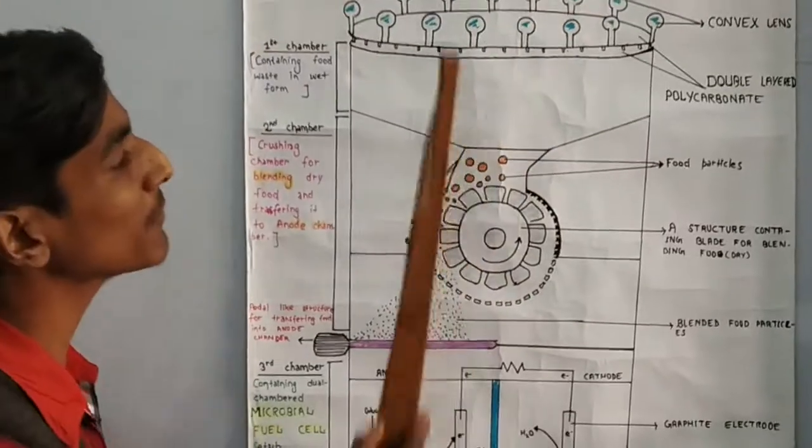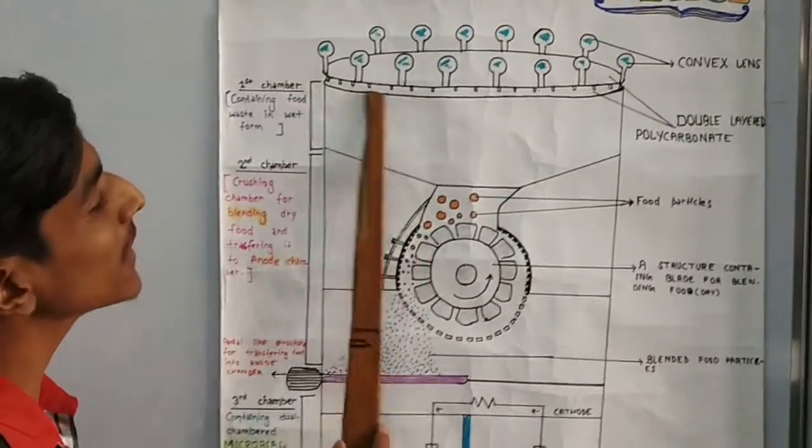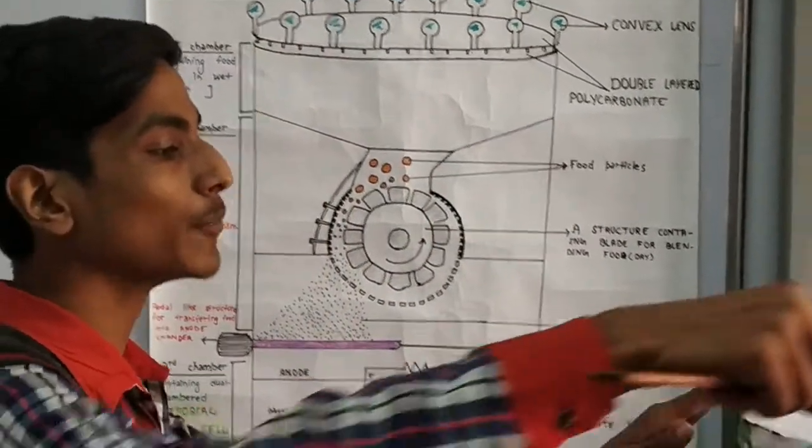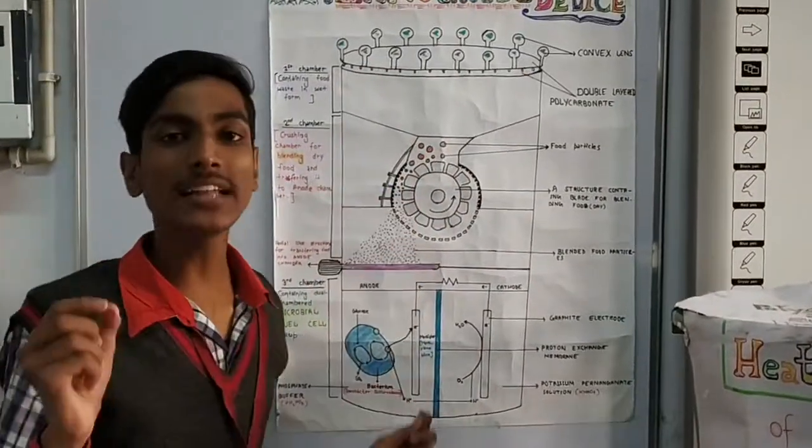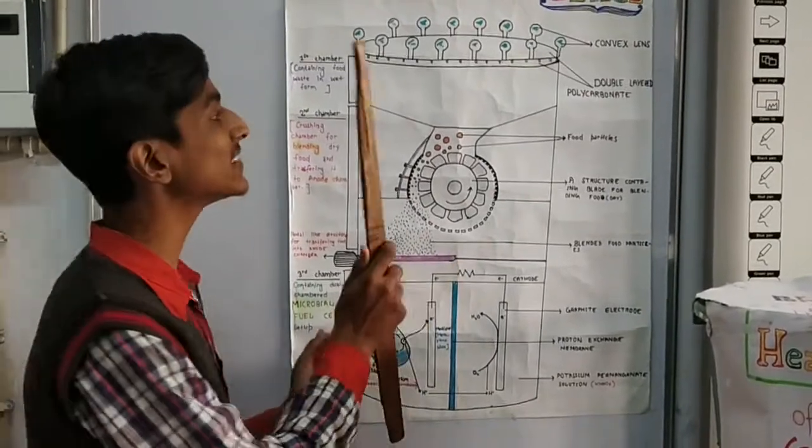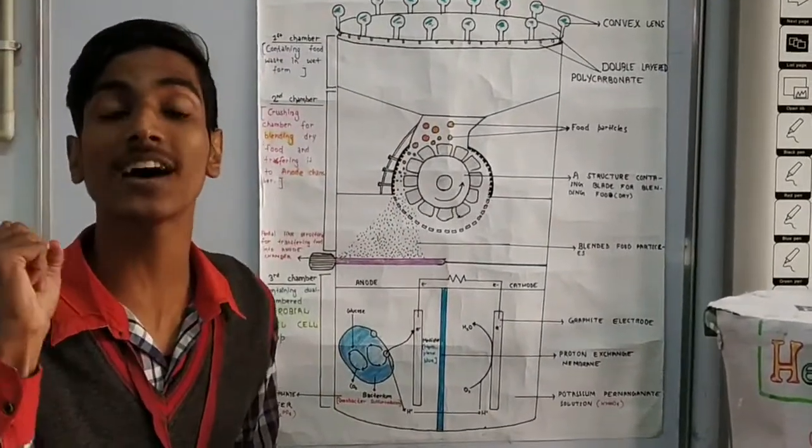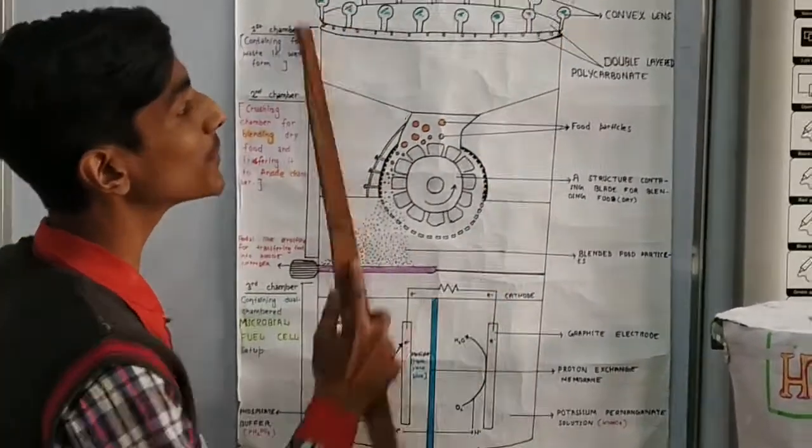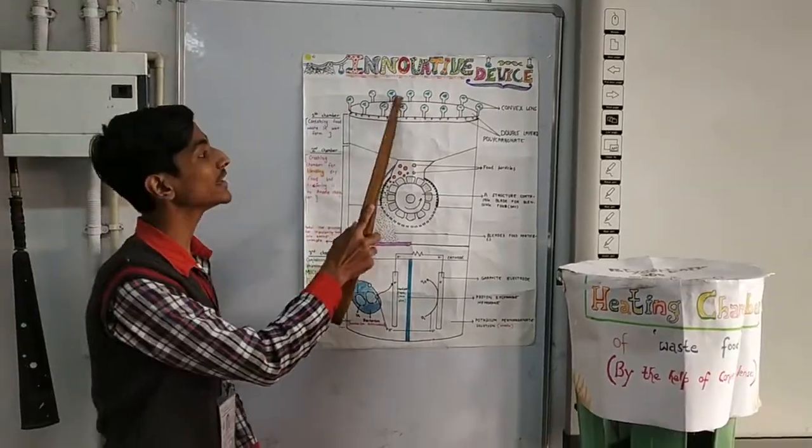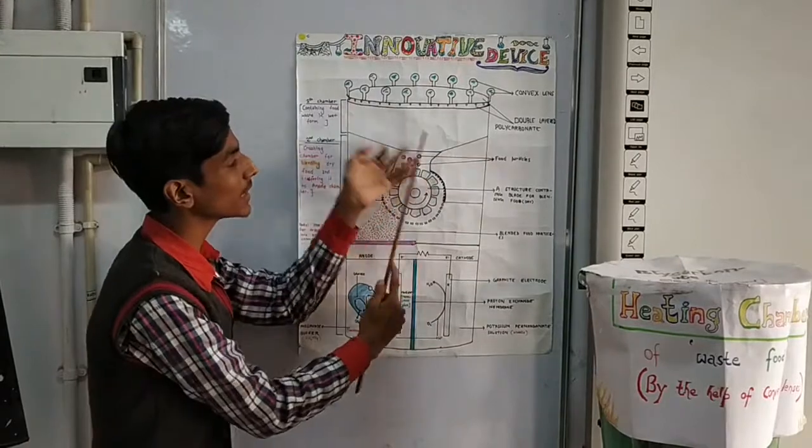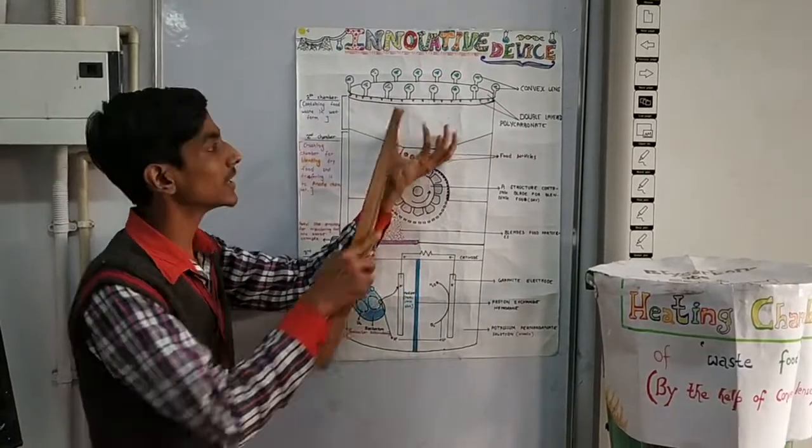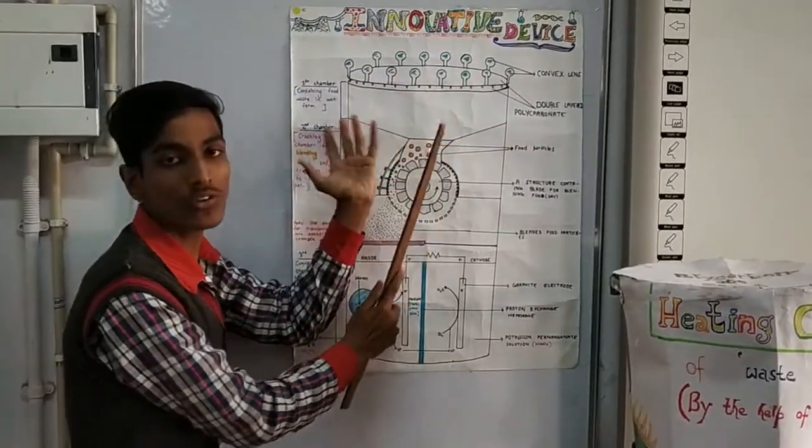On top of this, we added a dual-layered polycarbonate sheet. These are like greenhouse glasses with better heat retention capacity. On the four sides, we have convex lenses. These convex lenses will converge the light and this concentrated light will heat the waste. The polycarbonate glasses will trap the heat.